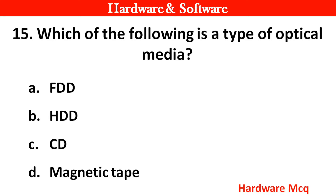Question 15: Which of the following is a type of optical media? Right answer is option C or D — CD/DVD.